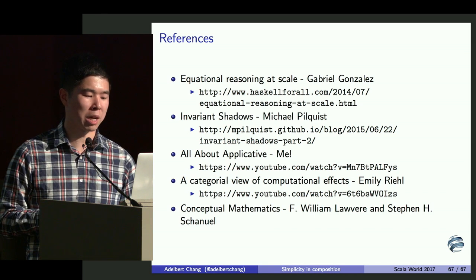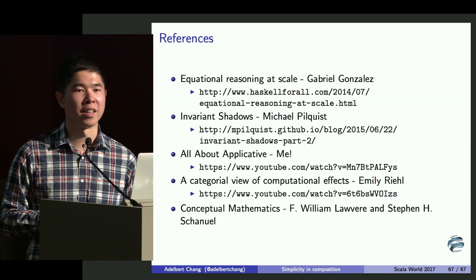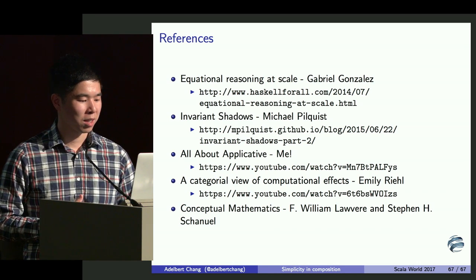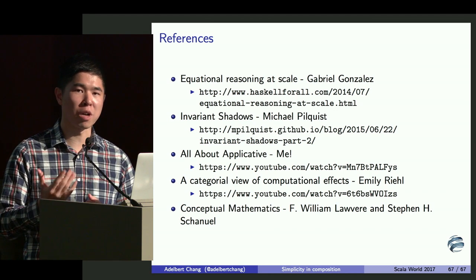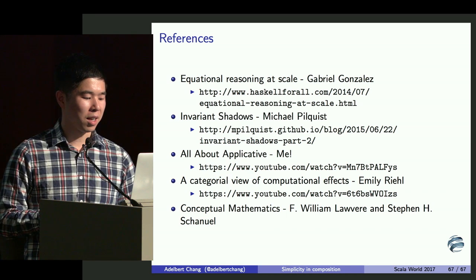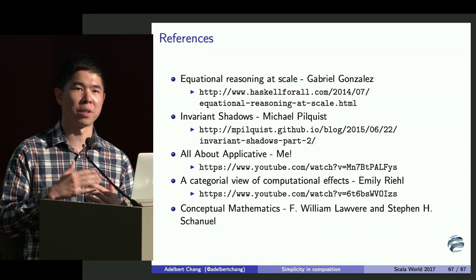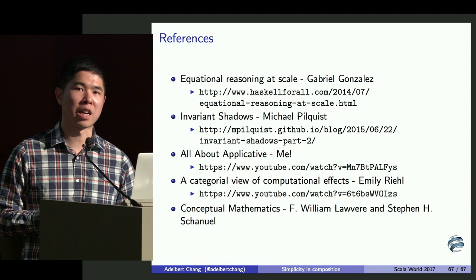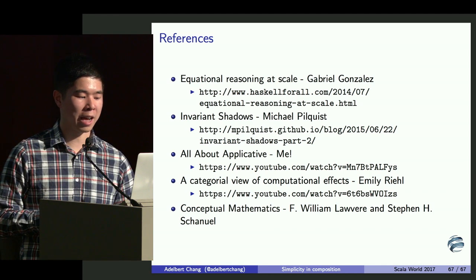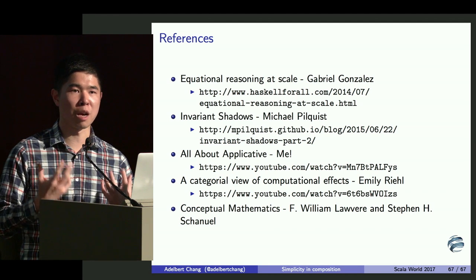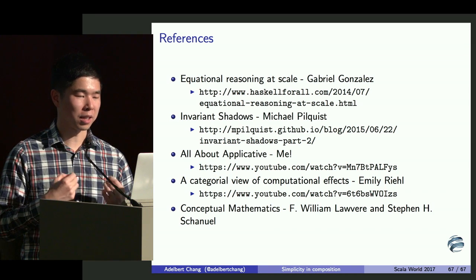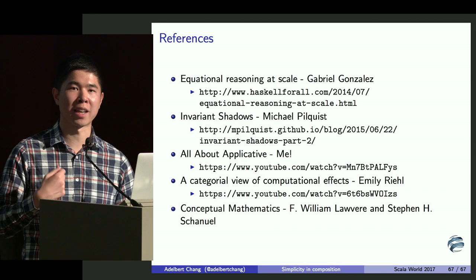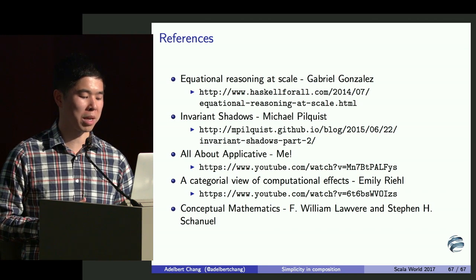This talk was inspired by a blog post by Gabriel Gonzalez, a Haskell-oriented writer whose post I read two years ago and have been thinking about ever since. Michael Pilquist has a series of blog posts on lax monoidal functors. I gave a talk at BayHack this year on applicative functors and monoids and how they compose. Emily Riehl's talk 'A Categorical View of Computational Effects' at ComposeConf is a really good talk on how category theorists view computation. And if you want to learn more about category theory itself, I found the book Conceptual Mathematics by Lawvere and Schanuel really good — with good exercises and a lot of drill for hammering new concepts in.